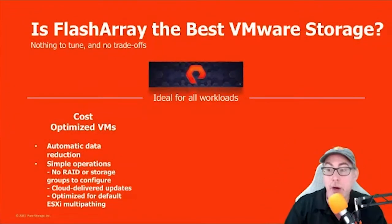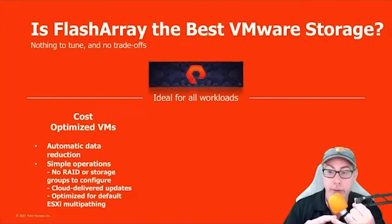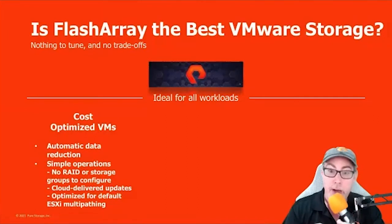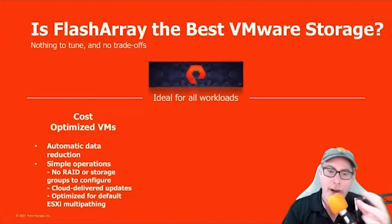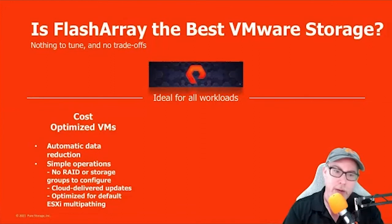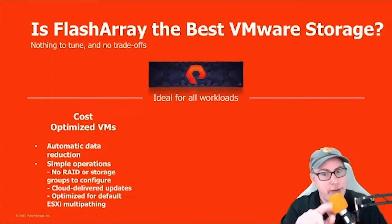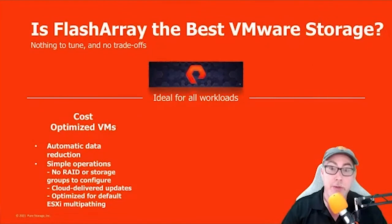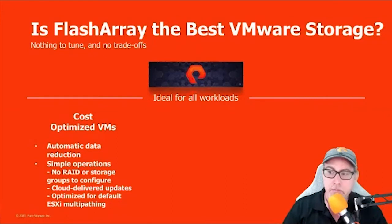We think about cost optimized, because that's always a big category. From a Pure standpoint, there's automatic data reduction — both inline and post-process deduplication and compression. We don't have to think about configuring RAID levels; it's always N plus two. We don't have to think about aggregates and storage pools and all that. Updates are delivered via the cloud, and even from a simplicity-of-upgrade standpoint, there's no performance impact. And the same multi-pathing — optimized around the native MPIO approach — round-robin equals one for ESX multi-pathing.